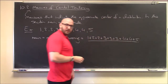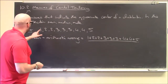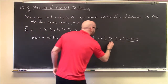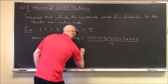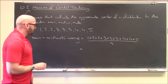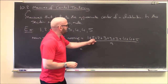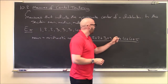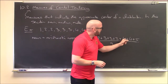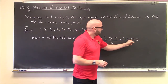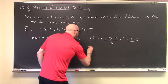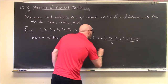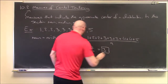Divided by the total number of elements in this sample — 9 numbers. Adding them all up: 1 plus 2 is 3, plus 2 is 5, then 8, 11, 14, 18, 22, 27. So that's 27 over 9, or just 3.